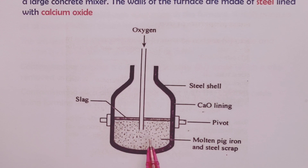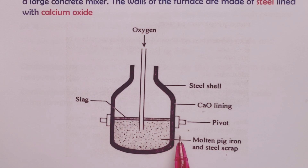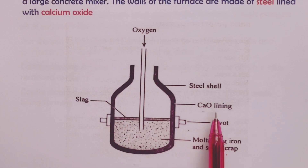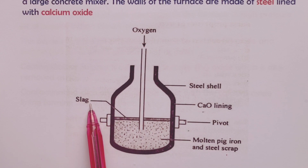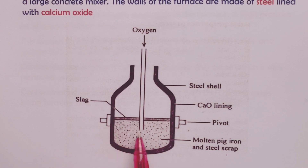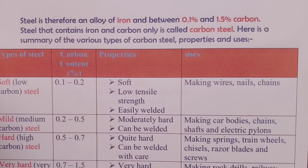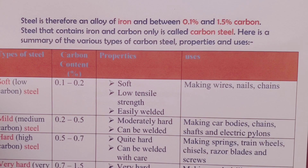On the other hand, impurities of silica and phosphorus react with the calcium oxide lining of the furnace to form slag, which floats on top of the molten steel. From the way steel is obtained from pig iron, we can conclude that steel is an alloy of iron and carbon, with percentage carbon content ranging from 0.1% to 1.5%.